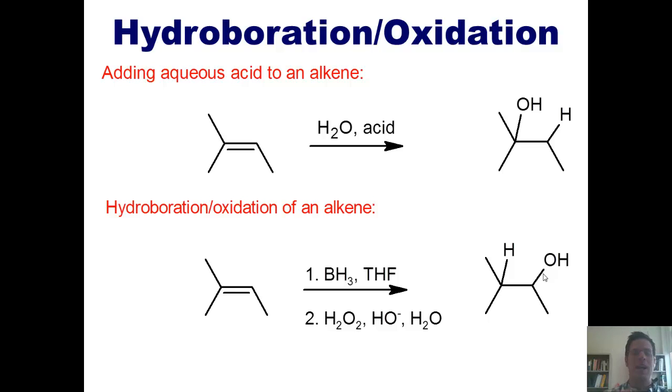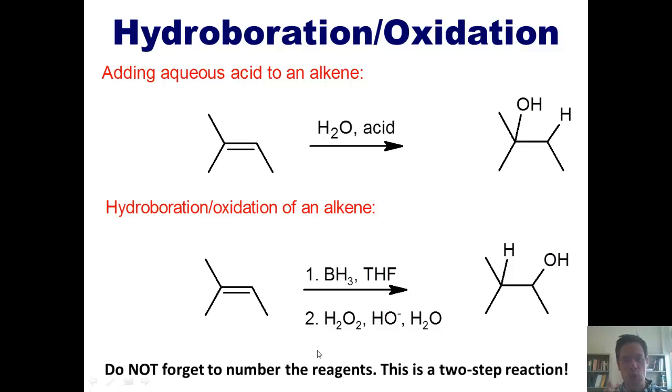Thus, if I'm ever in a circumstance where I need to add an OH to an alkene but I want it to be in the opposite position from where it would normally go, I do these conditions. One thing I want to point out is that when you are writing out these steps, do not forget to number the reagents. This is a two-step reaction. You have to write one, BH3THF, and two, H2O2, hydroxide, and H2O.